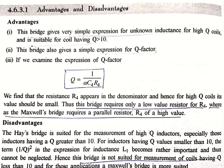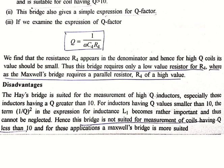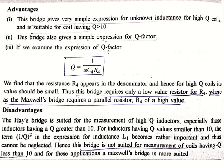Thus Hay's bridge requires only a low value of resistor for R4. In contrast, Maxwell's bridge requires a parallel resistor R4 whose value is also high. In Hay's bridge we can use R4 of low resistor value.